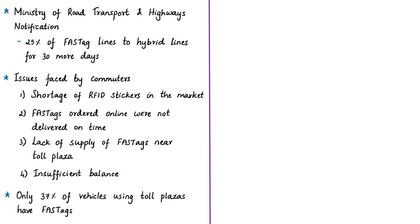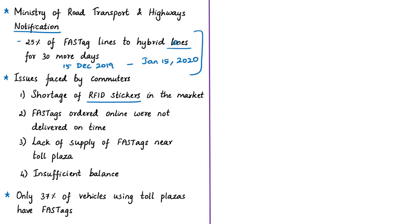The news article notes confusion among travellers over a Ministry of Road, Transport and Highways notification stating that 25% of declared FASTag lanes should be converted into hybrid lanes at every toll plaza, to be carried out until January 15 — 30 more days from 15th December 2019. This is perceived as a deadline extension for mandatory FASTag use. Issues faced by commuters include shortage of RFID stickers in the market, online-purchased FasTags not delivered on time, and lack of supply of FasTags near toll plazas — which if available would have made adoption easier.